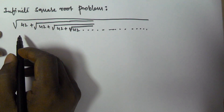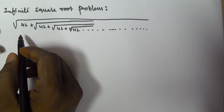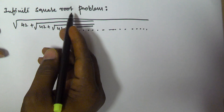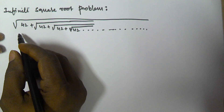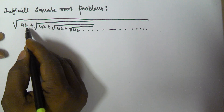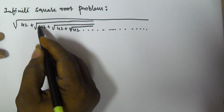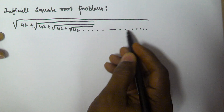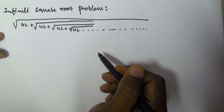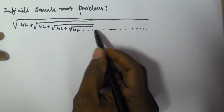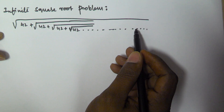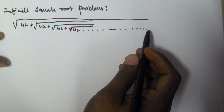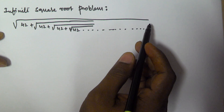Hello friends, in this video I am going to show you how to solve a tricky square root problem. The given problem is: under root of 42 plus under root of 42 plus under root of 42, and so on to infinity. We have to find the value of this infinite square root.